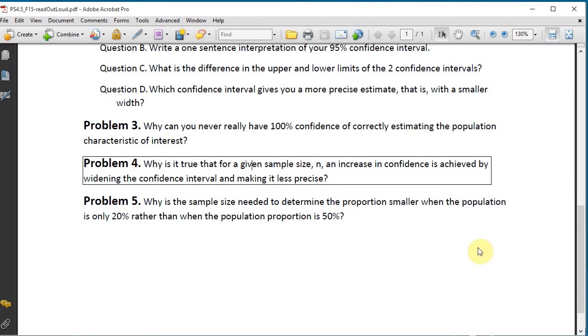What's the next problem? Problem 4. Why is it true that for a given sample size n, an increase in confidence is achieved by widening the confidence interval and making it less precise?